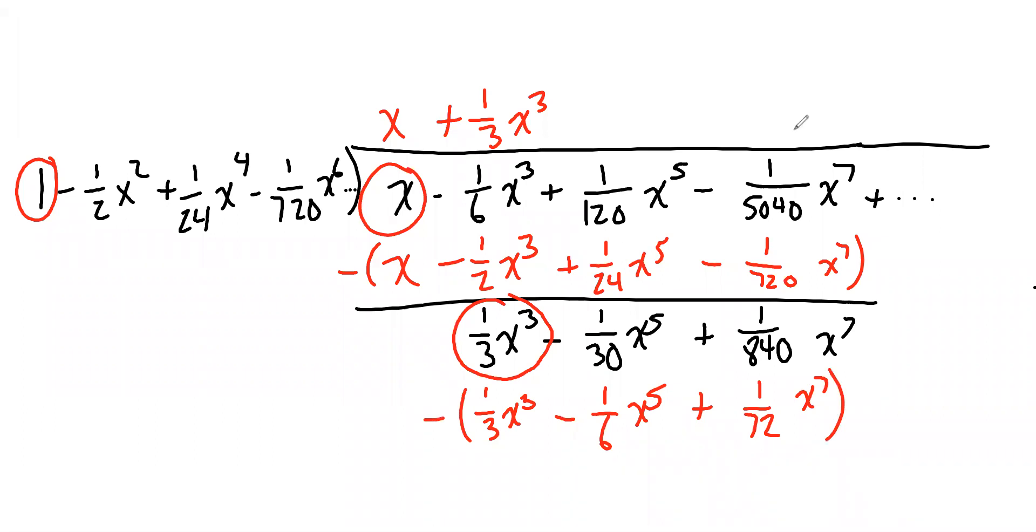And let's see what's left. The x cubes cancel. We have negative 1/30 minus negative 1/6. Hit that with some fives. And we end up with 4 over 30, which reduces to 2/15. So this is 2/15 x to the fifth. And then in the last column, the x to the seventh column, we have 1 over 840 minus 1 over 72.